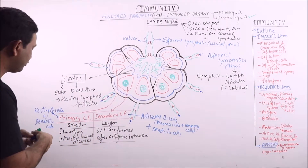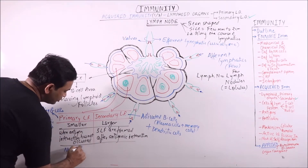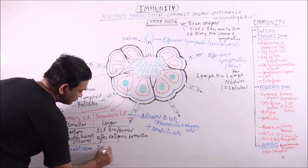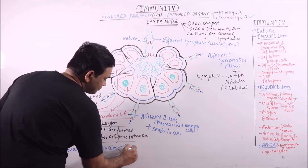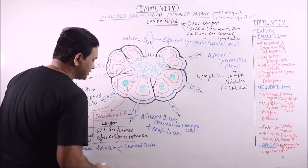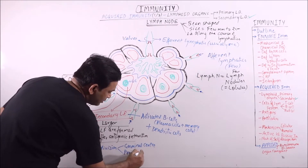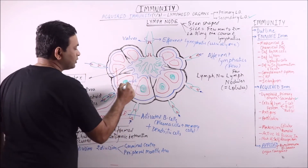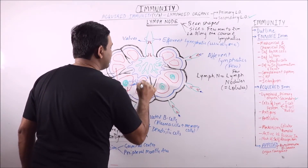A primary follicle has no subdivisions. While a secondary lymphoid follicle has two divisions: the first is the germinal center, which is on the inner side, and the second is the peripheral mantle area. Together these form the secondary lymphoid follicle.